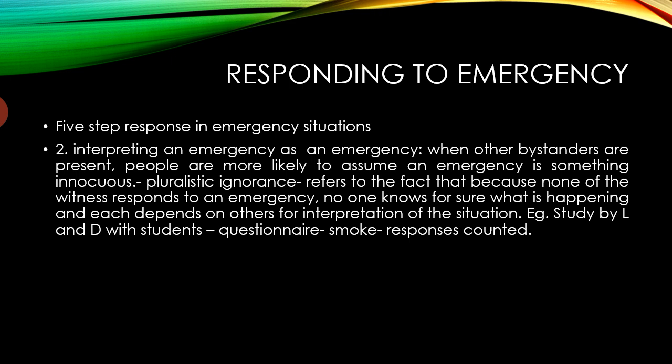The second step is interpreting an event as an emergency. When other bystanders are present, people are less likely to assume an emergency — they may assume it is innocuous. This is called pluralistic ignorance, which refers to the fact that because none of the witnesses responds, no one knows what is happening and each person depends on others for interpretation. This is also called informational influence — they assume there may not be a danger.